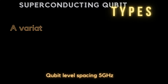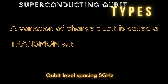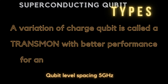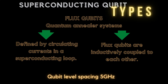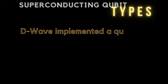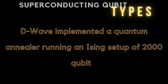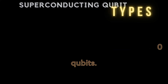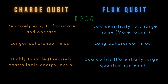Superconducting qubits can be broadly classified into two types: charge qubits and flux qubits. Charge qubits rely on the number of excess Cooper pairs on a superconducting island to represent the quantum state. By controlling the flow of electrons to and from the island, the charge state of the qubit can be manipulated, allowing for quantum computations to be performed. Flux qubits, on the other hand, rely on the magnetic flux threading through a superconducting loop to represent the quantum state. By controlling the magnetic field through the loop, the flux state of the qubit can be manipulated, allowing for quantum computations to be performed.